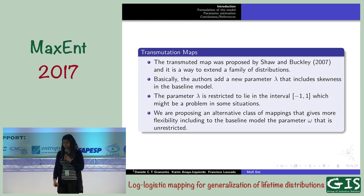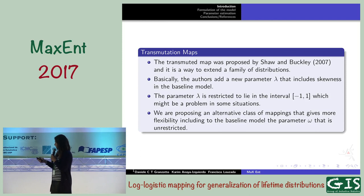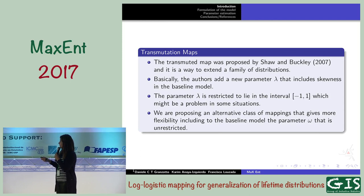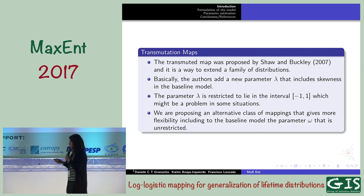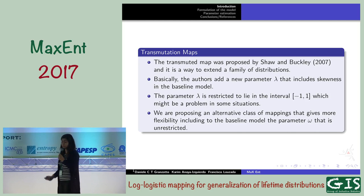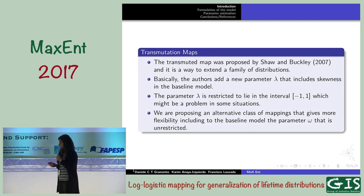As in everything in life, there are good points and bad points. One bad point of using the transmutation map is that when we include this parameter, we turn the extension a little bit more flexible, but this parameter lambda is restricted to lie in the interval from minus one to one. That can be a problem in some practical situations, particularly when estimating at the limits — like when the parameter lambda is too close to minus one or too close to one.